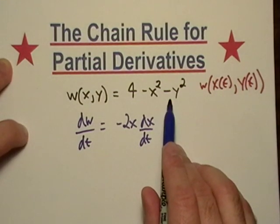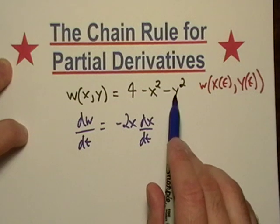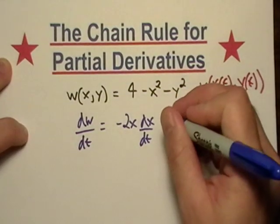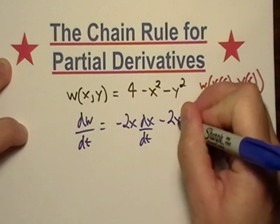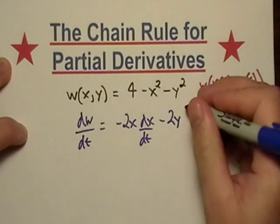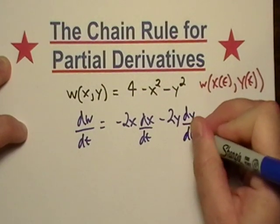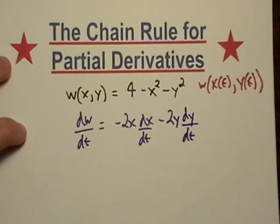Now I get to my y term, and the same thing: y is a dependent variable of t, so I'm going to take the derivative. But since I don't know what the derivative of y is with respect to t, I'm just going to write it generically.